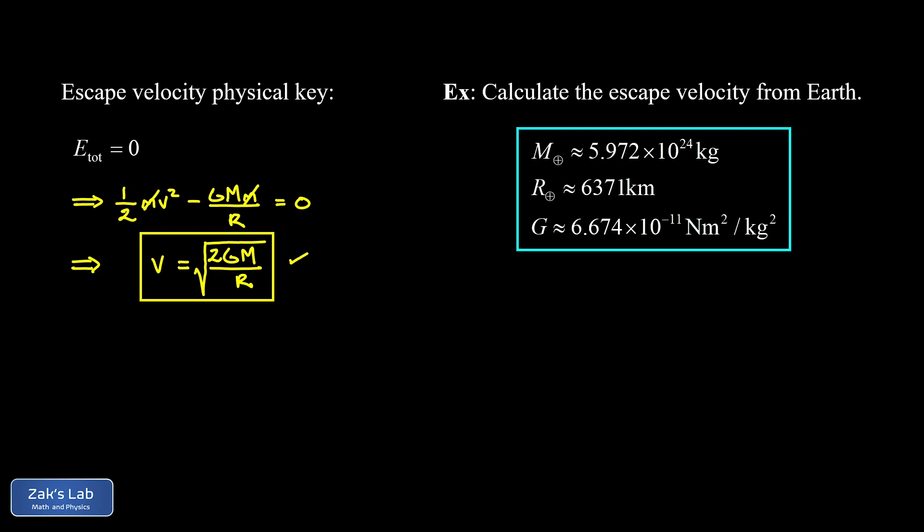So in our table of data, we're given the mass of the Earth as 5.972 times 10 to the 24 kilograms. The radius of the Earth, 6,371 kilometers. We're going to need to put that in SI units. So making that conversion real quick. This is 6.371 times 10 to the third kilometers. But then when we change to meters, we get another factor of 10 to the third. So we have 6.371 times 10 to the sixth meters. And then there's big G, the universal gravitational constant, as 6.674 times 10 to the negative 11 newton meters squared per kilogram squared.